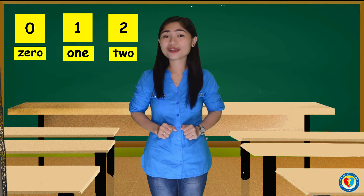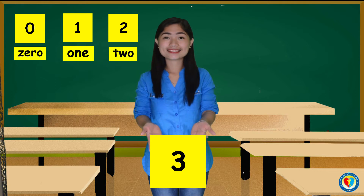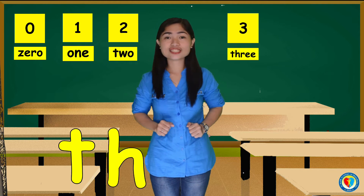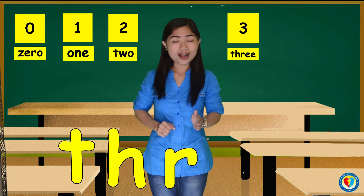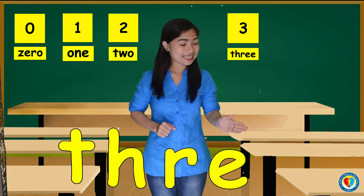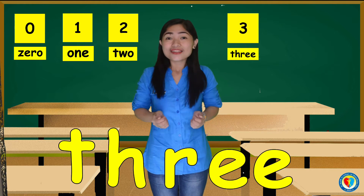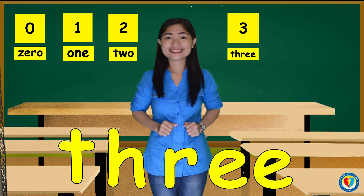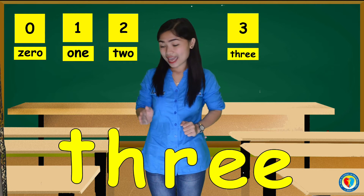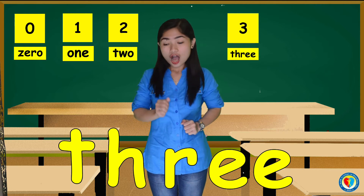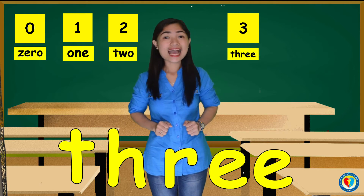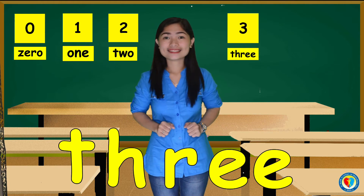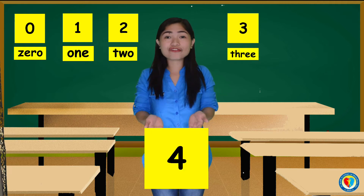For the number 3, that's T, H, R, E, E. Three. Can you follow me, kids? T, H, R, E, E. Three.